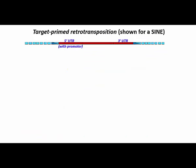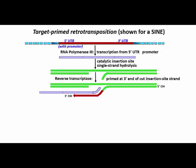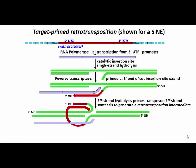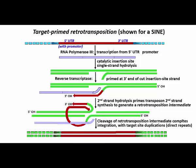Target-primed retrotransposition is typical of a SINE. The enzymes involved in cleaving the target site DNA and in reverse transcription must come from the transcription and translation of genes in a concurrently active LINE. Target-primed retrotransposition begins with transcription by RNA polymerase III. After hydrolysis of one strand of target DNA at the insertion site and annealing of the retrotransposon transcript, reverse transcription is primed from the free 3' hydroxyl end of that cut target strand. After hydrolysis of the second target DNA strand, reverse transcription of the second retrotransposon DNA strand is primed from the 3' end of the cut second target site DNA. This transposition intermediate is resolved by cleavage and insertion of the copied element into the target site DNA, including the generation of the direct repeats of target site DNA.